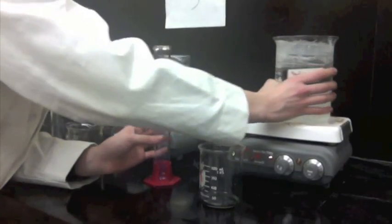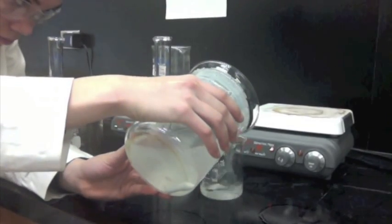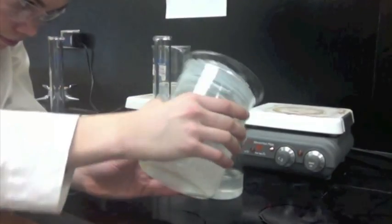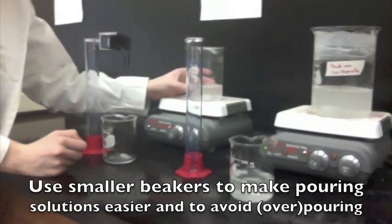We are going to use smaller beakers just to make the transfer easier. So we are going to aim for around 75 milliliters of sodium carbonate. There you go. And 100 milliliters of calcium chloride.